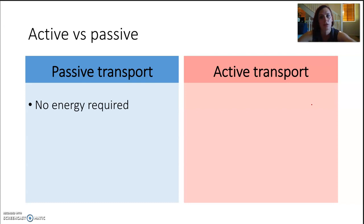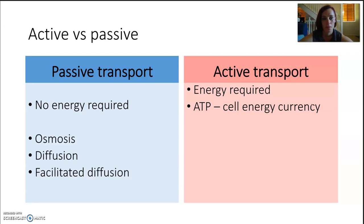So passive transport does not require our body to expend any energy, but active transport does. And ATP is our cellular currency, and we'll learn more about that when we talk about cellular respiration. The types of passive transport we will talk about are osmosis, diffusion, and facilitated diffusion, but the active transport ones are about ion pumps and endo and exocytosis.